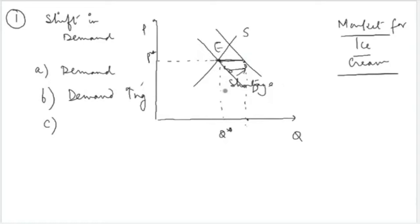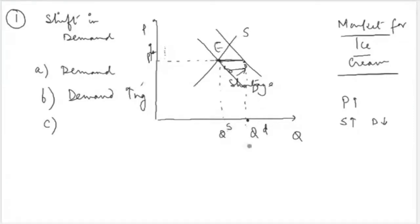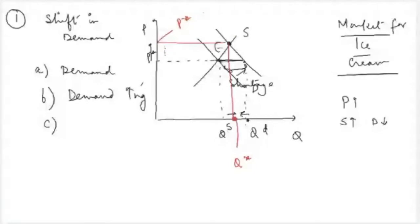Because there is a shortage, the market will start increasing its price. As prices increase, supply will increase and demand will start falling. You will reach a new equilibrium point where the equilibrium quantity and equilibrium price are both higher. So whenever there is a rightward shift in the demand curve, a new equilibrium is established at higher prices and higher quantity.